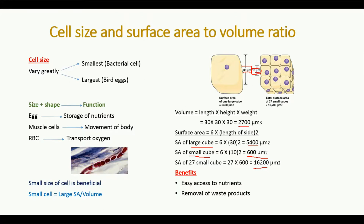That is why we say: the smaller the size, the larger the surface area. As the size of the cell decreases, its surface area to volume ratio increases, which is beneficial because it allows easy access to nutrients and easy removal of waste products. A large cell must transport waste over a large distance to exit the cell, whereas a small cell can remove waste easily without traveling large distances. That is why small cell size is beneficial.